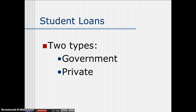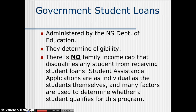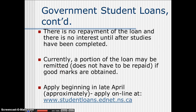Another way to pay for school is through student loans, and it's probably the most common way. There are two types: government loans and private loans. Government student loans are administered by the Nova Scotia Department of Education, and to apply you have to go to their website — they determine eligibility. Contrary to popular belief, there's no family income cap that disqualifies any student from receiving student loans. One of the benefits of a government student loan is that you don't have to repay it right away, and there's no interest until after your studies are completed. Currently, a portion of the loan may be remitted — meaning it does not have to be repaid — if good marks are obtained. If you have very high marks, they'll allow you to remit a greater portion of your loan.